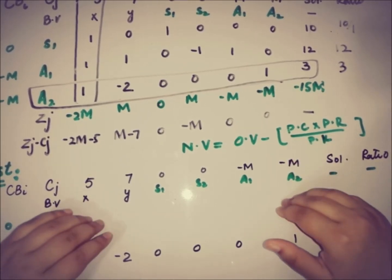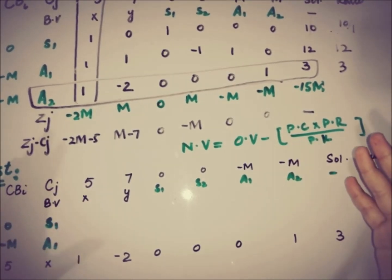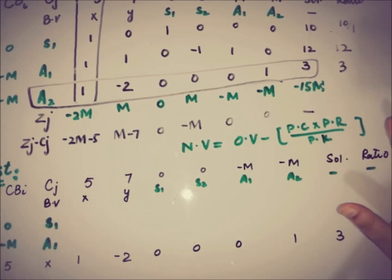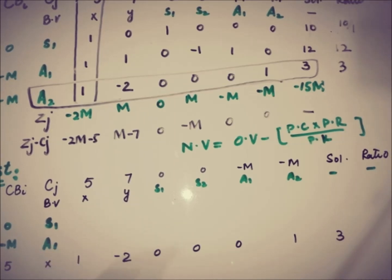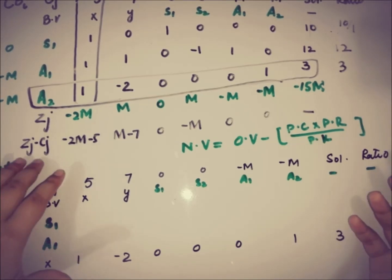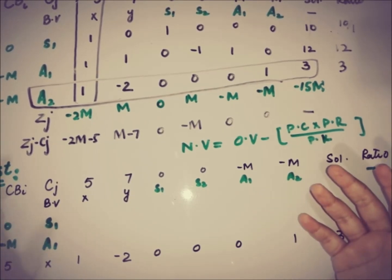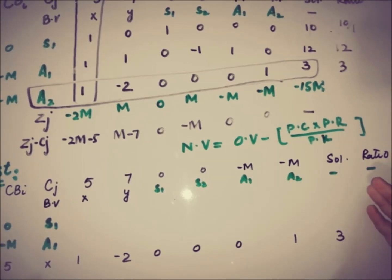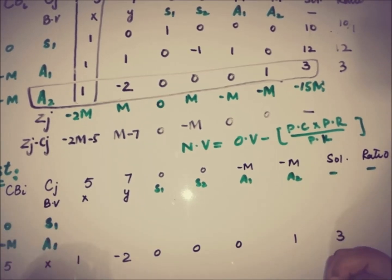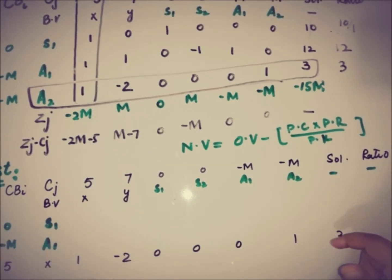Everything else — including the optimality conditions — remains the same as in the simplex method, since we are looking for maximum profit. In the next video, I'll discuss different types of special conditions that arise while solving simplex and Big M technique problems. Subscribe to the channel for more upcoming videos. Take care, goodbye.